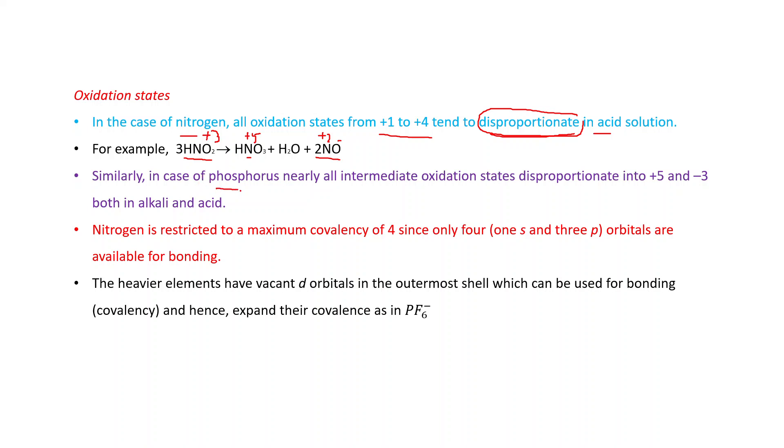Similarly, in case of phosphorus, nearly all intermediate oxidation states disproportionate into +5 and -3 both in alkali and acid medium.